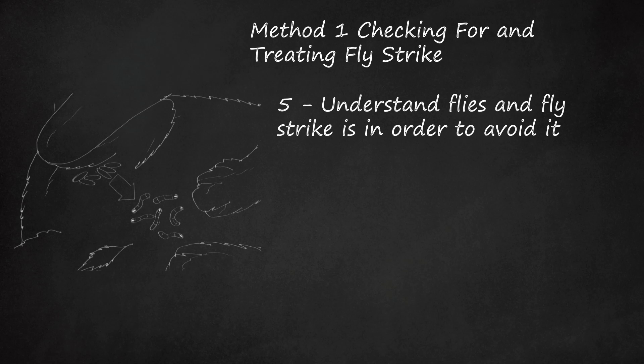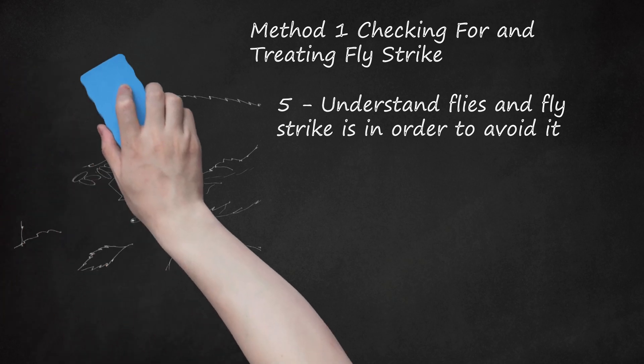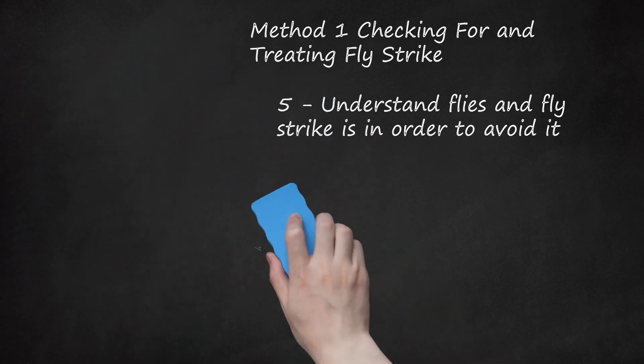Flies are unlikely to be attracted to really healthy tissue. Problems occur when the flies are attracted to damp skin, an infected area, or an area of skin covered in urine or feces. Thus rabbits with health problems or those kept in poor conditions where their skin is liable to be damaged, are at greatest risk of fly strike.